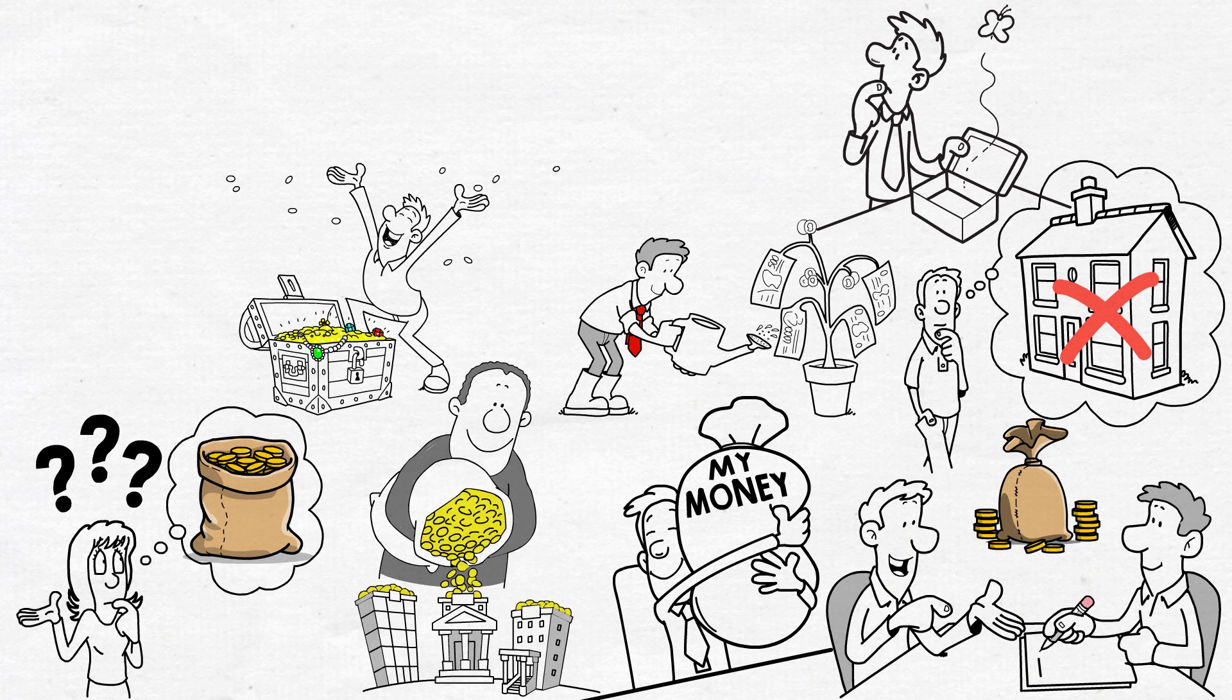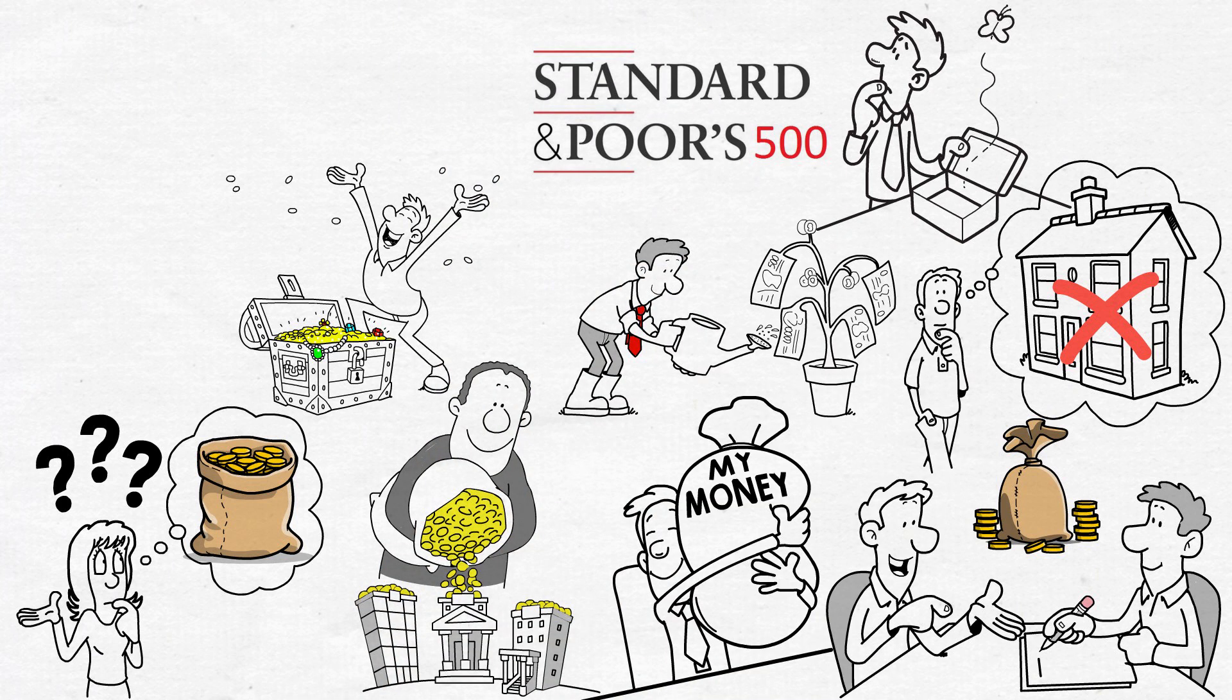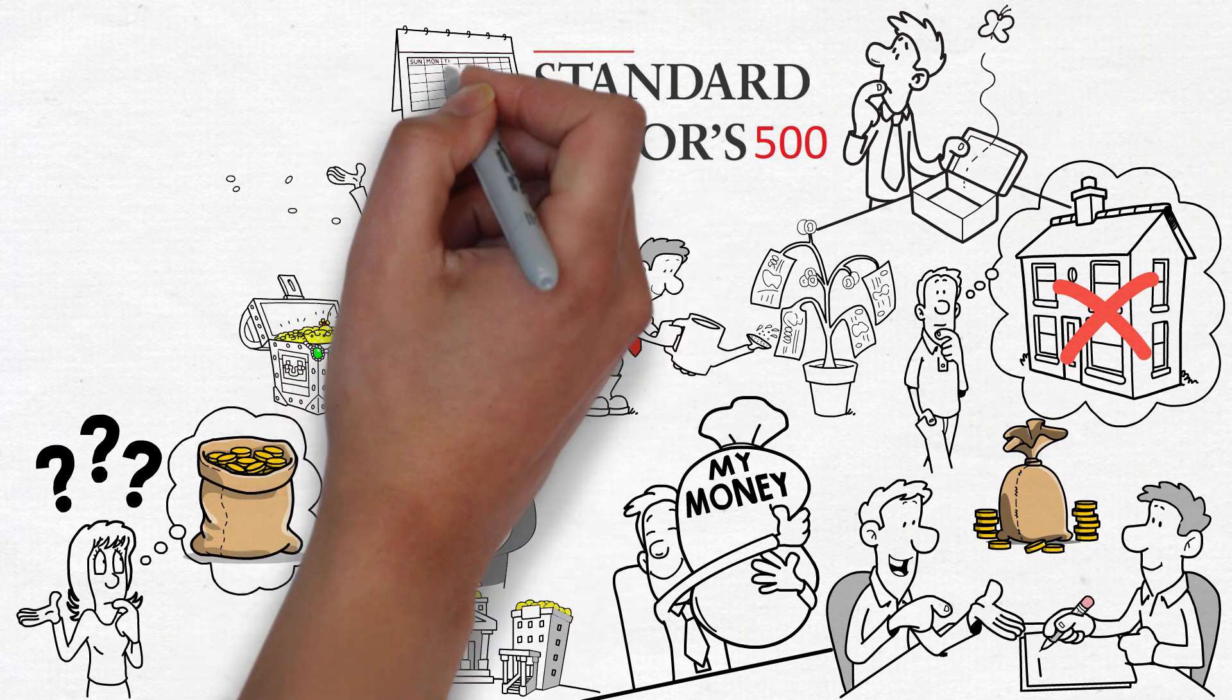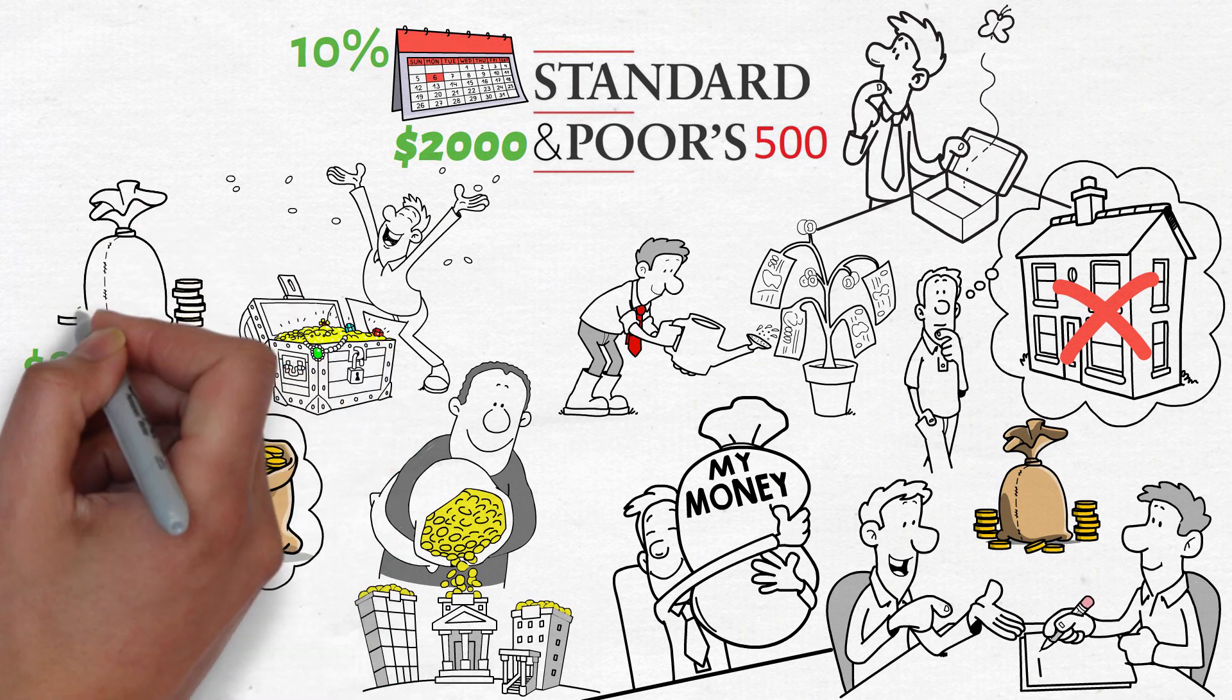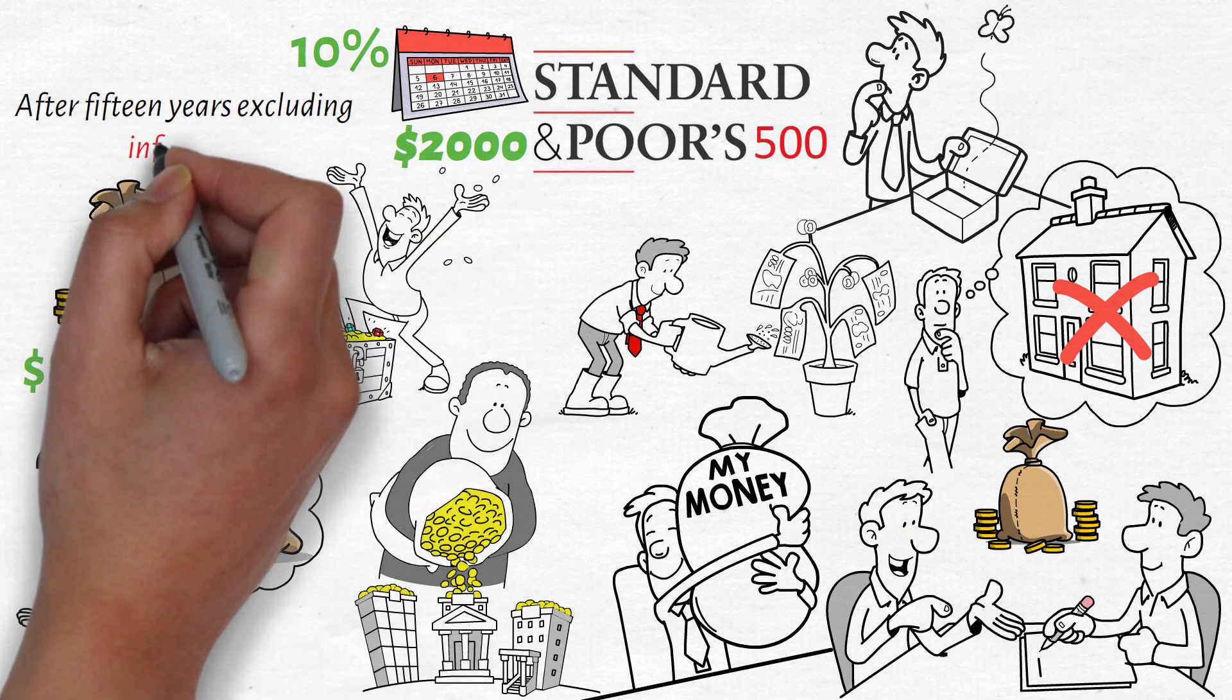Consider the S&P 500 as an example. If you started with no money and began investing $2,000 per month earning 10% per year, that would equate to over $800,000 after 15 years, excluding inflation.